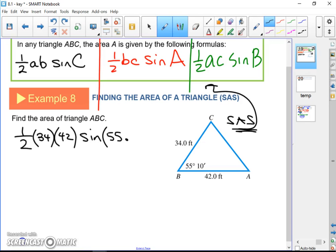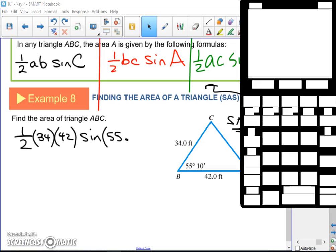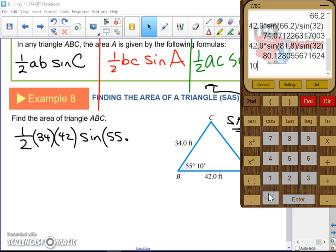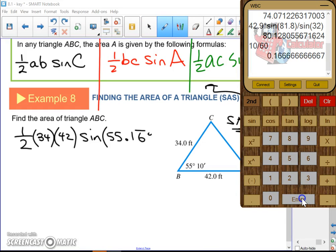That's going to be 55.10, you've got 10 minutes, means 10 over 60. So that's 55.16 repeating degrees.